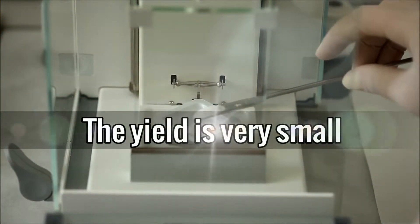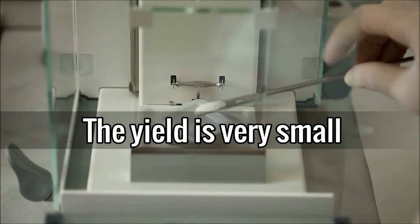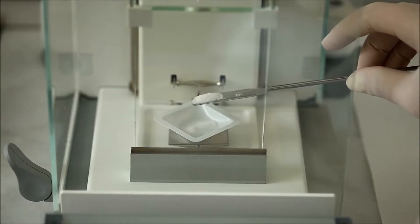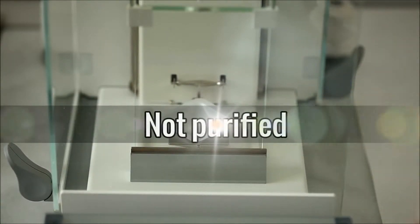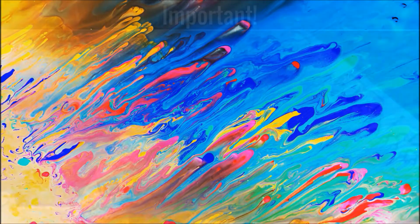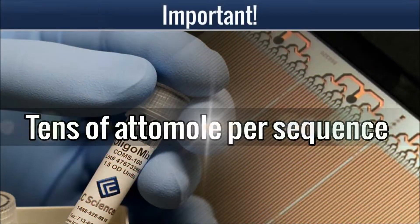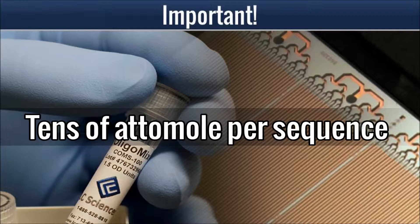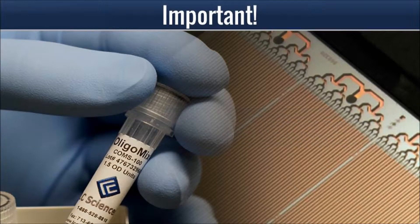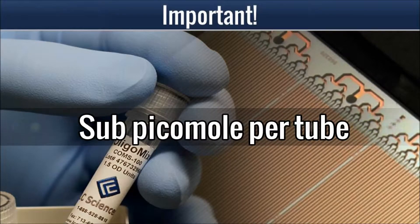Users need to be aware that the amount of each individual sequence is very small, and the product is not in a purified form. As a result, the product may behave somewhat differently from a simple mixture of individually synthesized oligos. The yield from a 4K chip is typically in the range of tens of attomoles per sequence and sub-picomoles per tube.